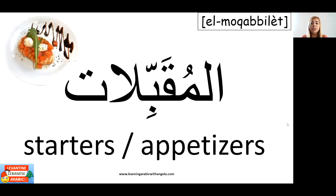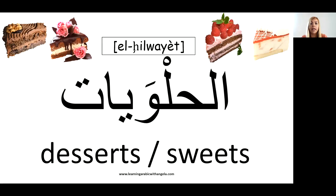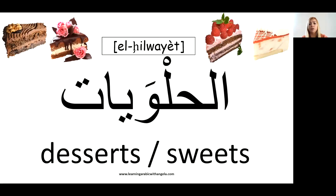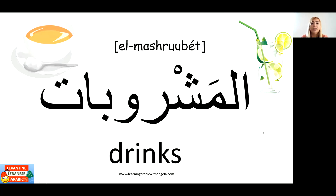Starters or appetizers: 'el-muqabbilat,' or 'el-muqabbilat' depending on whether you pronounce the qaf as qaf or glottal stop. Desserts or sweets: 'el-halawiyye' — and by the way, sometimes we say 'el-helo' for short; both are fine. Drinks: 'el-mashrubbat' in the plural — 'mashroob' in the singular.